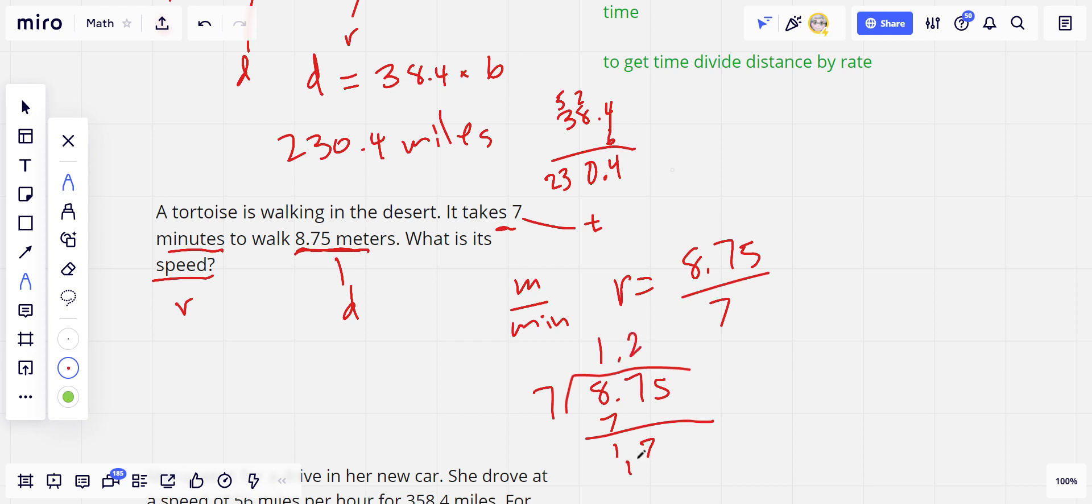We better put the decimal point up here. So that's 14, and that leaves 3.35. So 1.25 is our rate. And the way we would express this is 1.25 meters per minute. That is the rate.